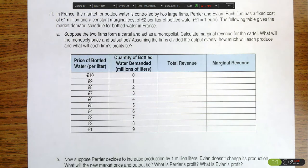This portion of the question is asking us to calculate the marginal revenue for each cartel member, figure out what the monopoly price and output would be, and determine what their firm's profits would be if they all coordinated together.